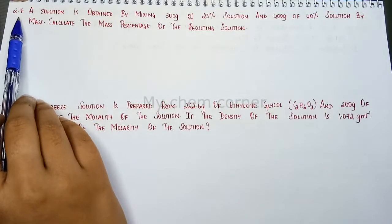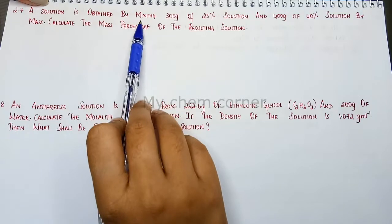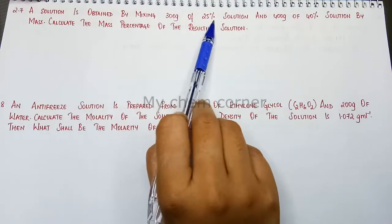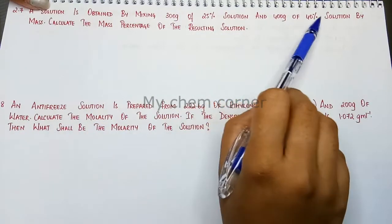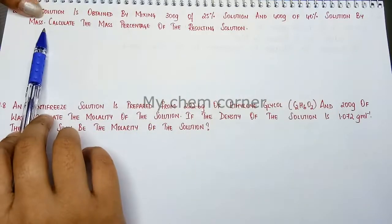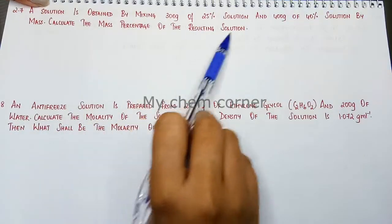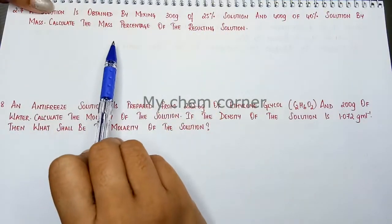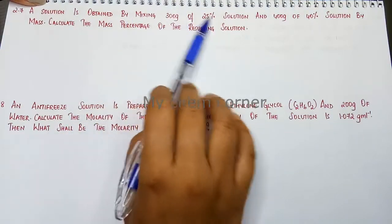Alright, so next question is 2.7. A solution is obtained by mixing 300 grams of 25% solution and 400 grams of 40% solution by mass. Calculate the mass percent of the resulting solution. So when you mix both of these, whatever solution you get, you need to find what is the mass percentage.